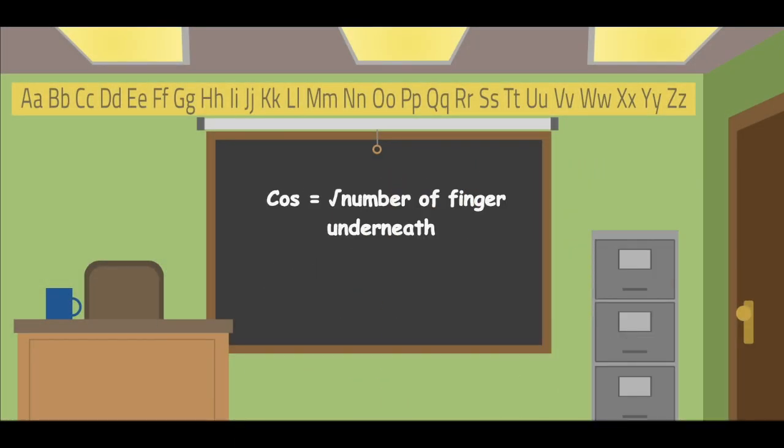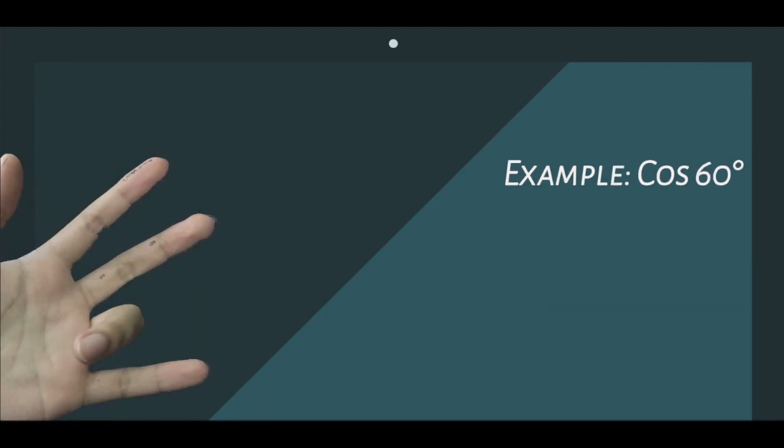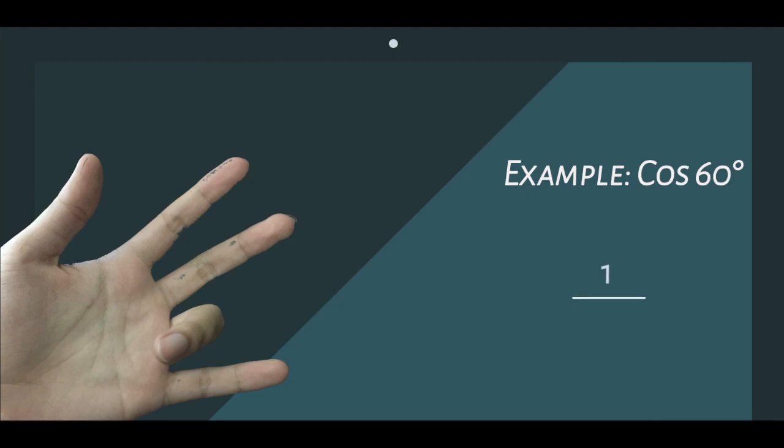For cosine, we square root the number of fingers underneath the finger we bend and divide by two. For example, cos 30 degrees: we bend our index finger down so we have three fingers underneath, so it will be root 3 over 2. Cos 60 degrees: we bend our ring finger, so we have one finger below, so the answer is 1 over 2.